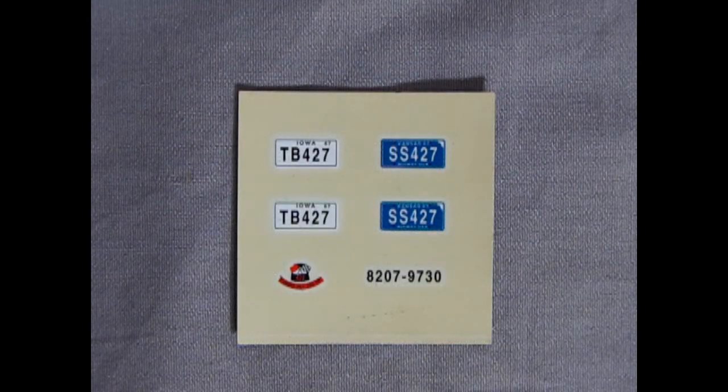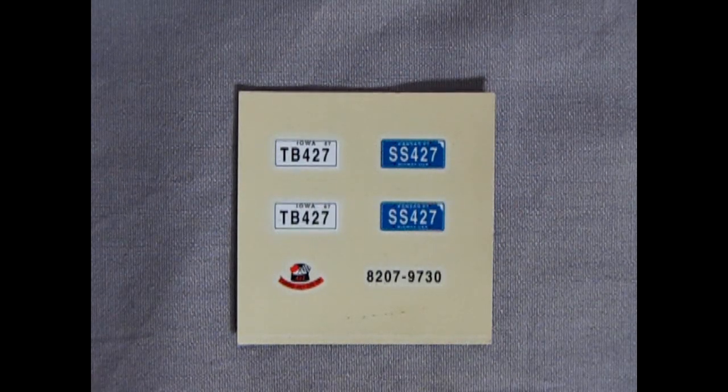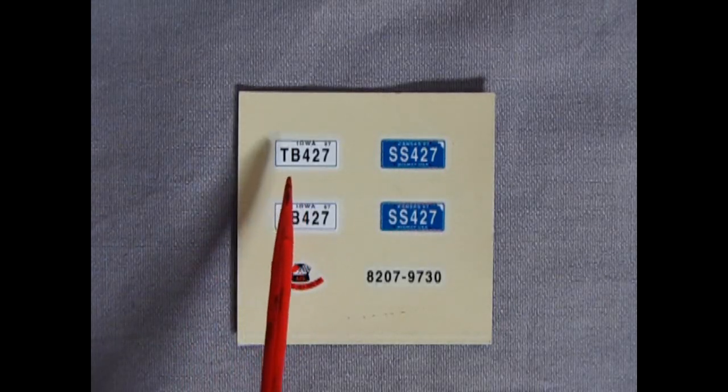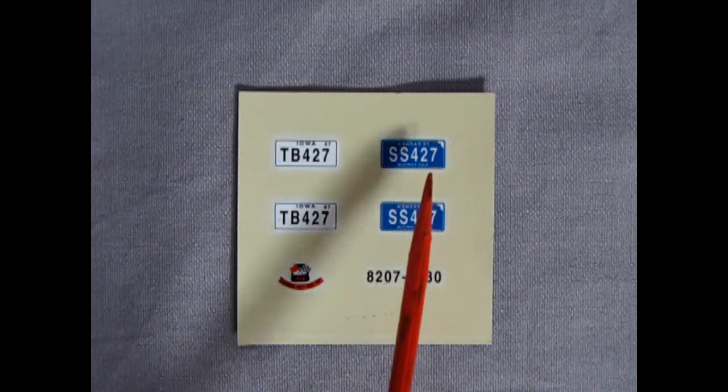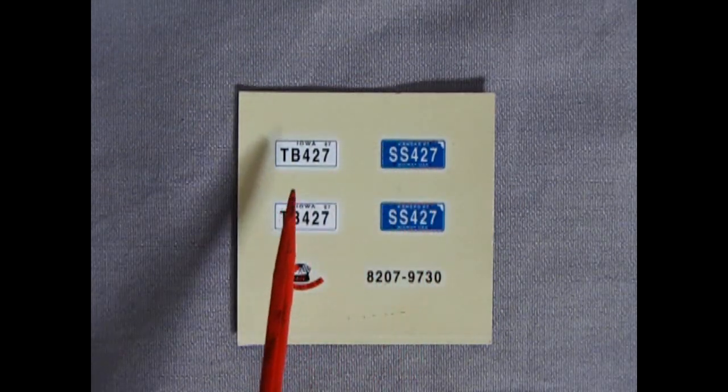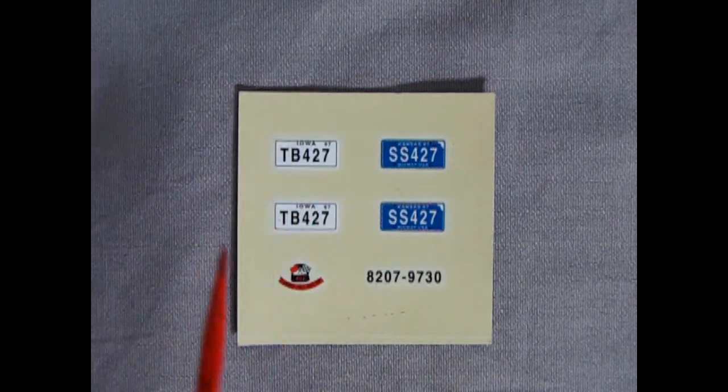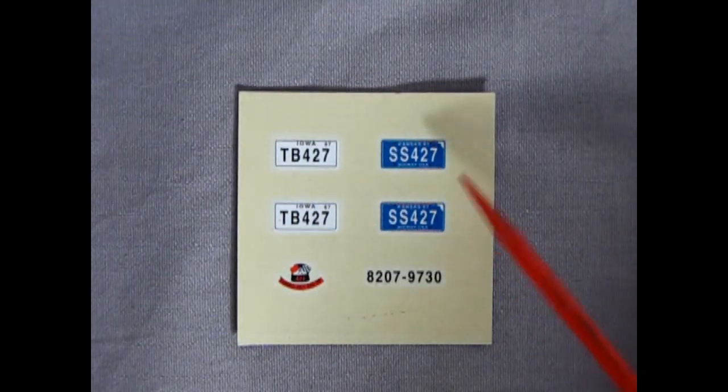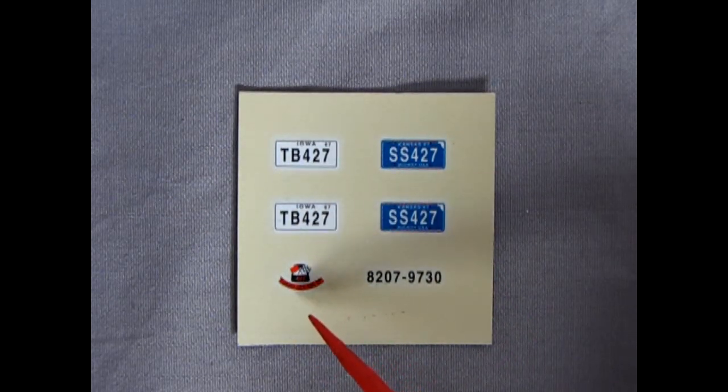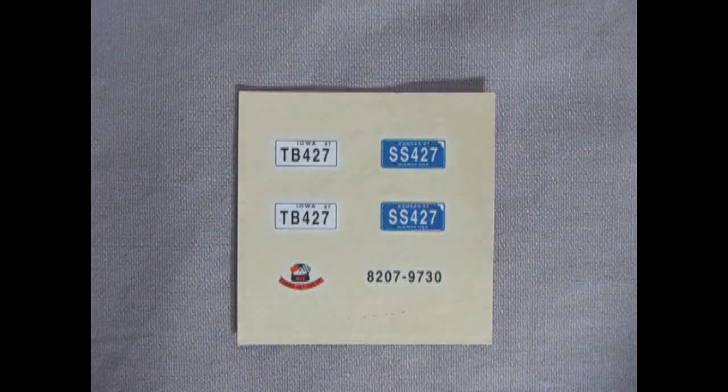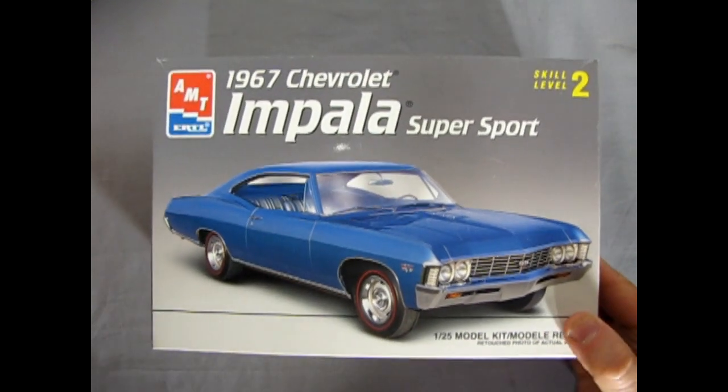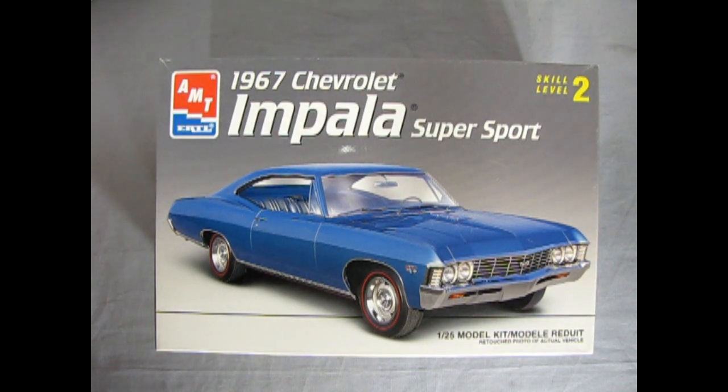And here's the final bit of our model kit. Of course I'm referring to the decal sheet. And you get two wonderful license plates from Iowa from 1967. And Kansas from 1967 as well. One is SS-427. The other is TB-427. The 427 of course referring to the engine. And here's the air cleaner decal for your 427 right there. And that completes our look at the AMT Ertl 67 Chevrolet Impala Super Sport model kit.